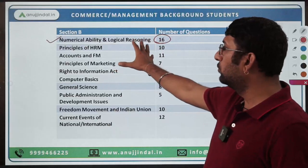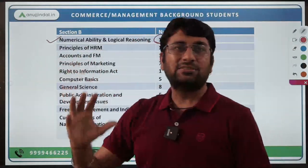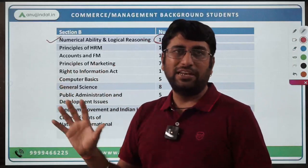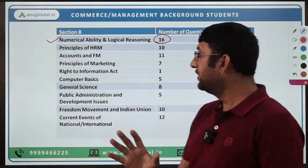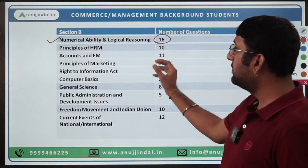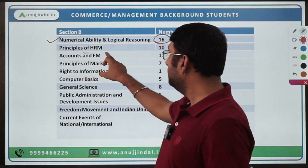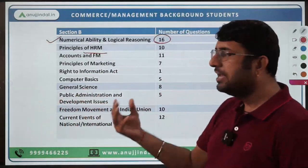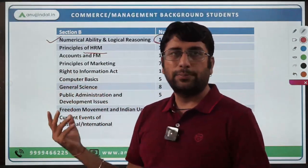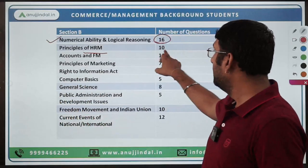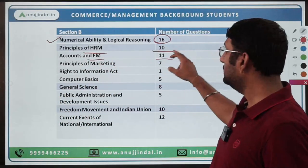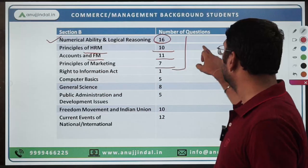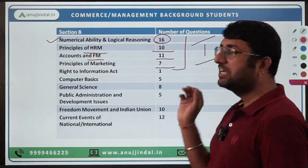The first topic I feel you should focus on in terms of scoring is Numerical Ability and Logical Reasoning, and the level is not very difficult. In the commerce and management area, Principles of HRM — just revision effort needed — is worth 10 marks; Accounts and Financial Management is worth 11 marks; and Principles of Marketing is worth 7 marks. Ideally, these should be your first priority sections.